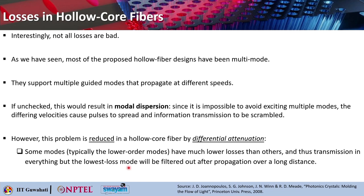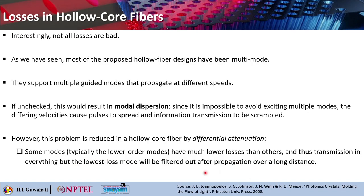Only the modes which have the lowest loss will be able to sustain. So although there is the possibility of multiple modes propagating in the fiber, during propagation the lowest-loss mode only survives and the other modes attenuate or die down. That is how the lowest-loss mode will be filtered out after propagating a long distance.